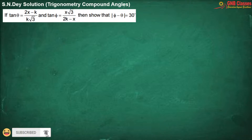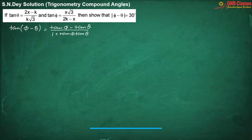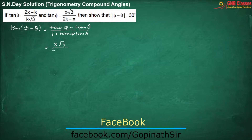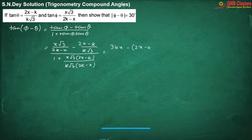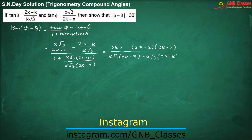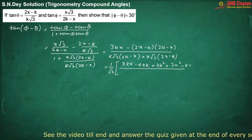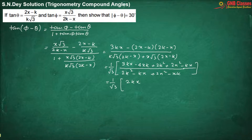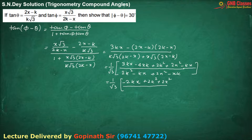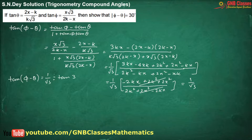In this problem, we are starting from tan phi minus theta, and replacing the values of tan phi and tan theta from the given conditions. After simplification and opening the brackets, in the numerator and denominator terms cancel out, and we are left with 1 by root 3 only. Therefore tan phi minus theta equals 1 by root 3, which is tan 30 degrees.